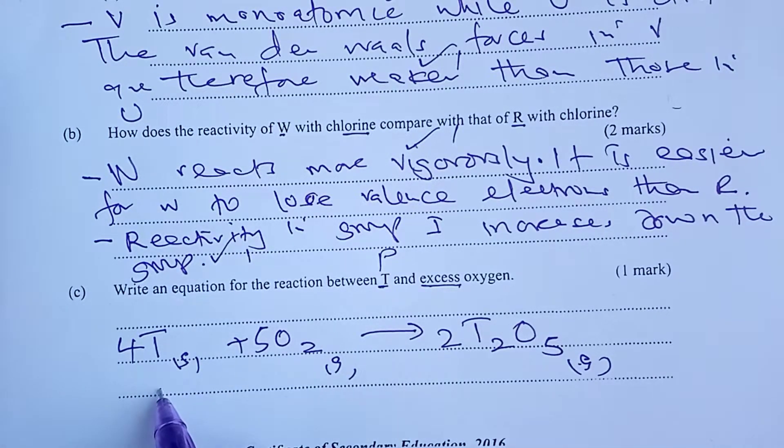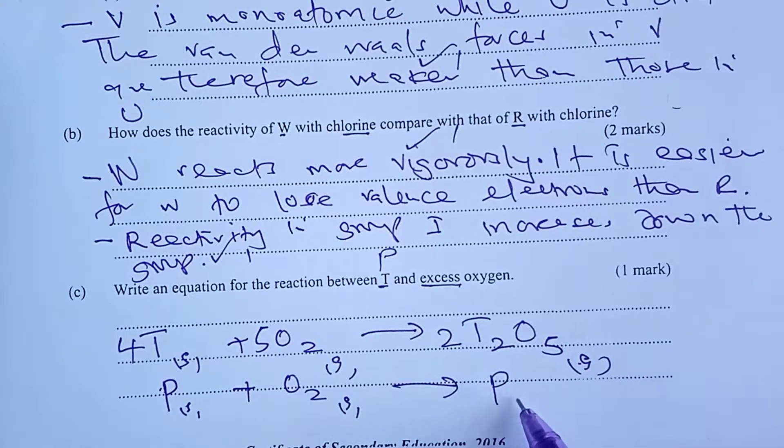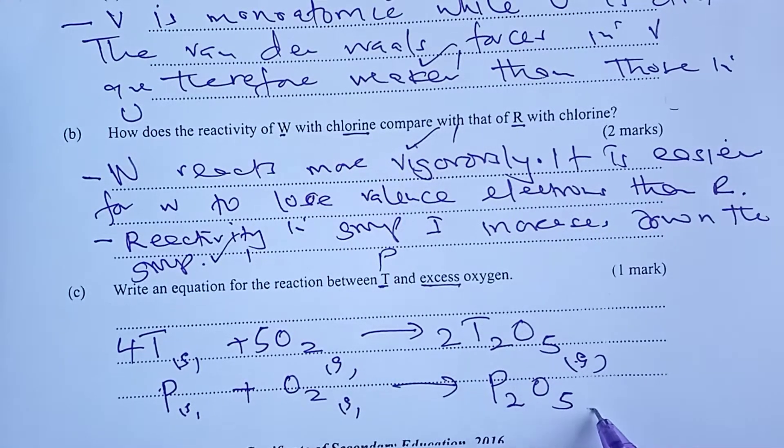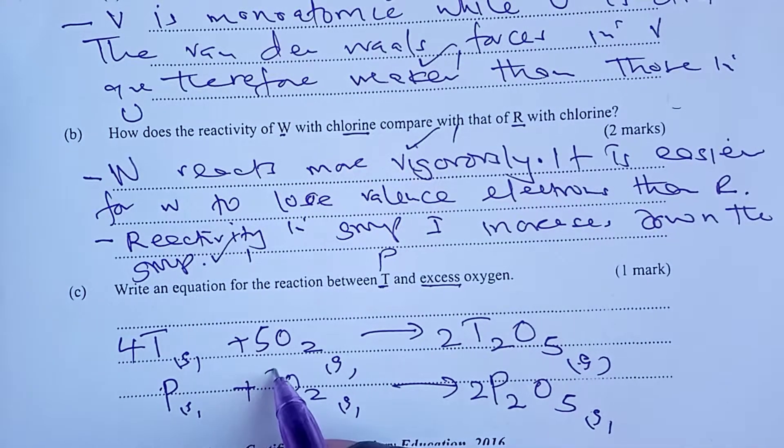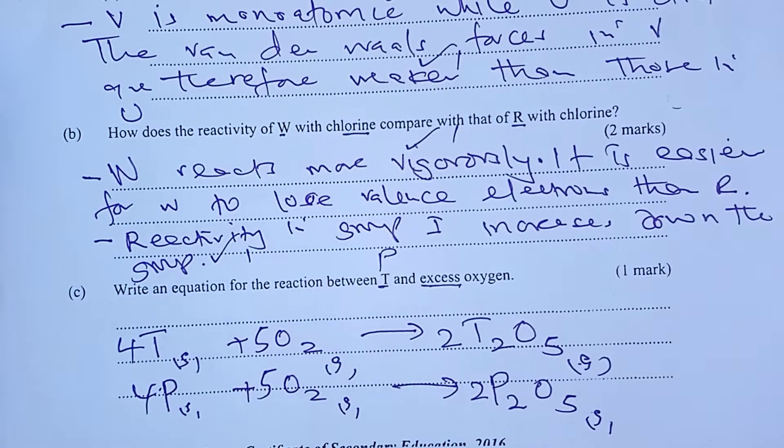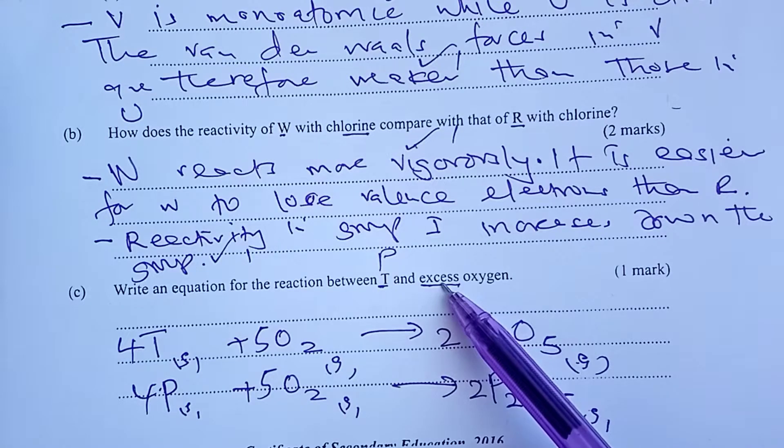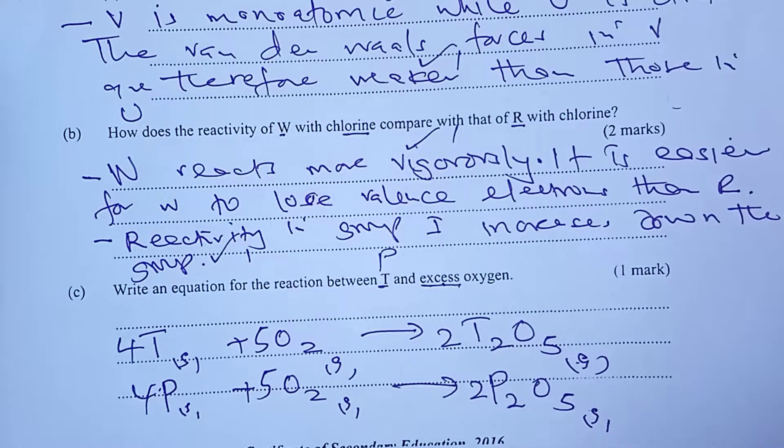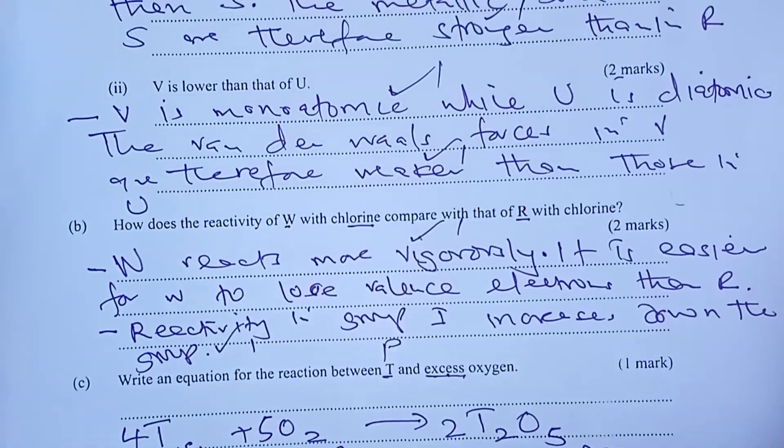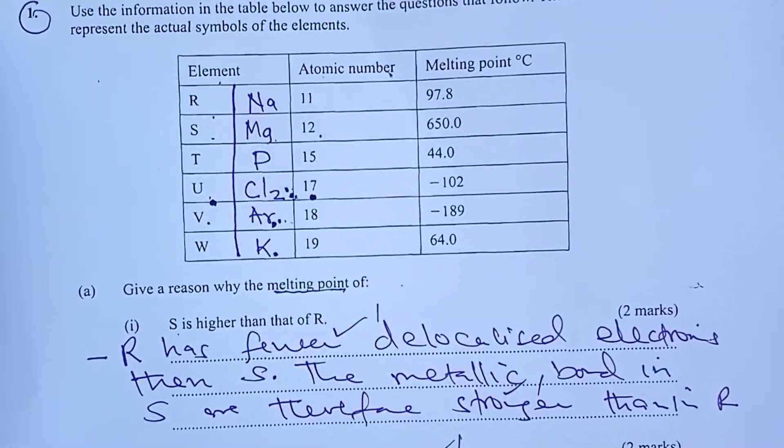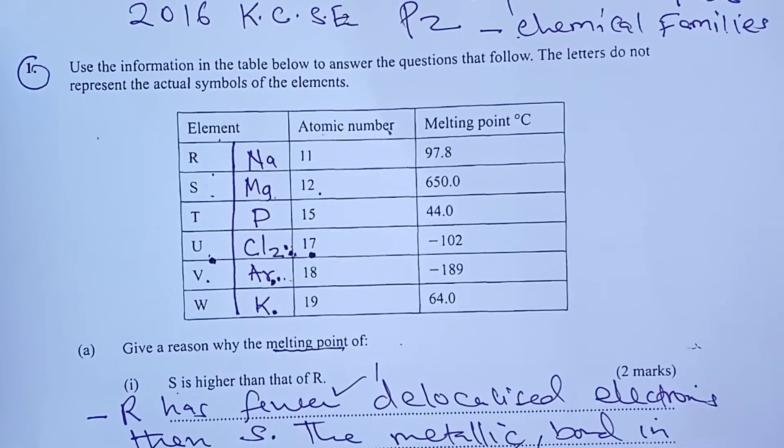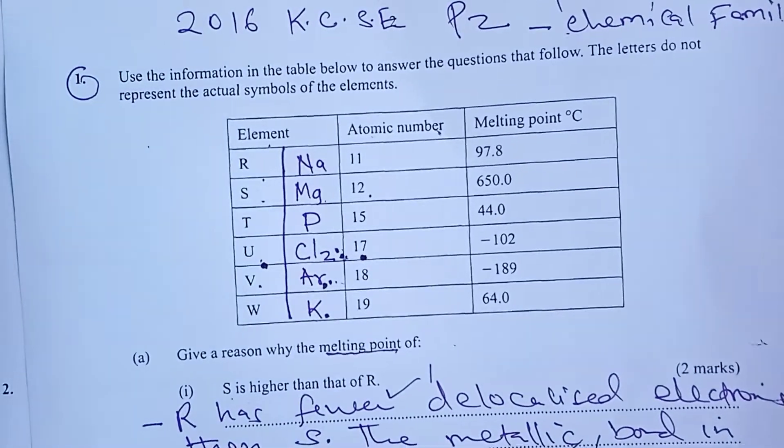Now, if a student went ahead to now use the actual symbol of the elements, this one is also allowed. This would be another option that you would have. Remember, the amount of oxygen is in excess, so we expect to form the higher oxide of phosphorus.